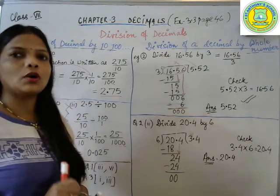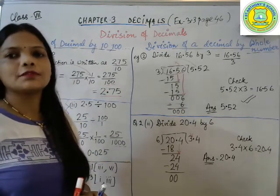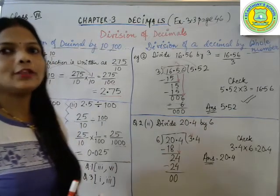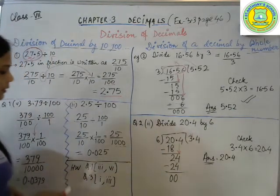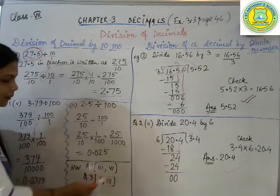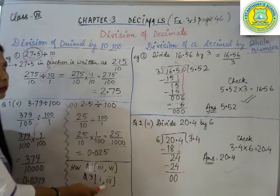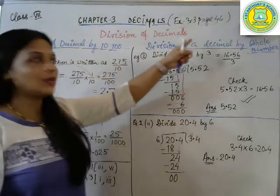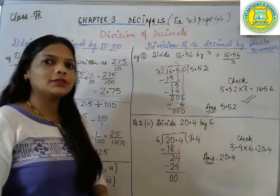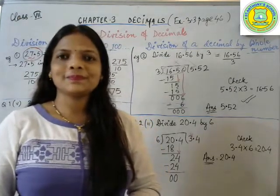And I am only giving selected questions for you all to solve as homework, but you can do all the questions of the exercise for upgrading your skill. So today's homework is question number 1, third and sixth part, question number 3, first and third part. I hope you know which exercise we are talking about. We are talking about exercise 3.3, page 46. That's all for today. Thank you. Have a nice day.